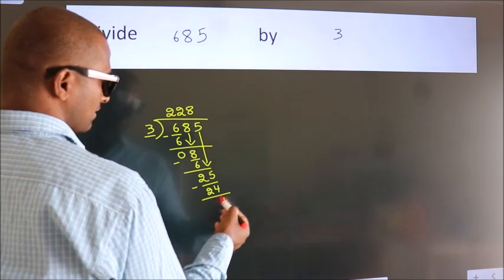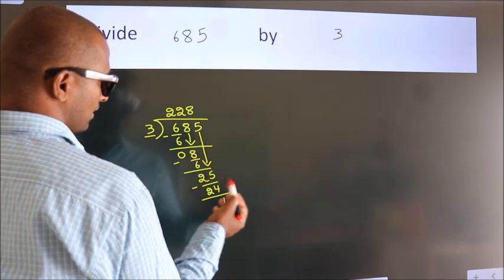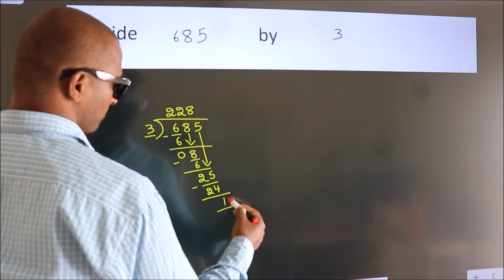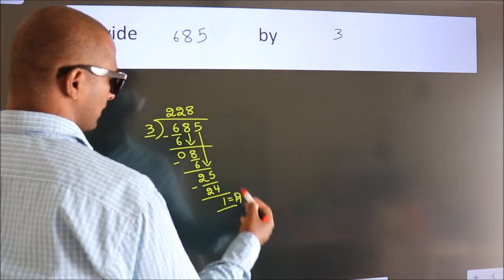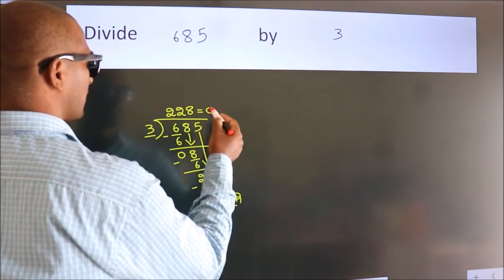After this, no more numbers to bring down. So, we stop here. This is our remainder. This is our quotient.